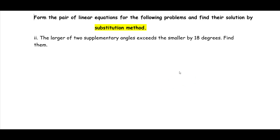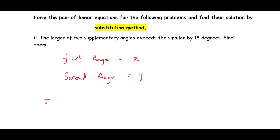I am considering the first angle as x and the second angle as y. The first condition is that these two angles are supplementary — meaning if we add them, we get 180 degrees. So x plus y equals 180 degrees. This is equation 1.